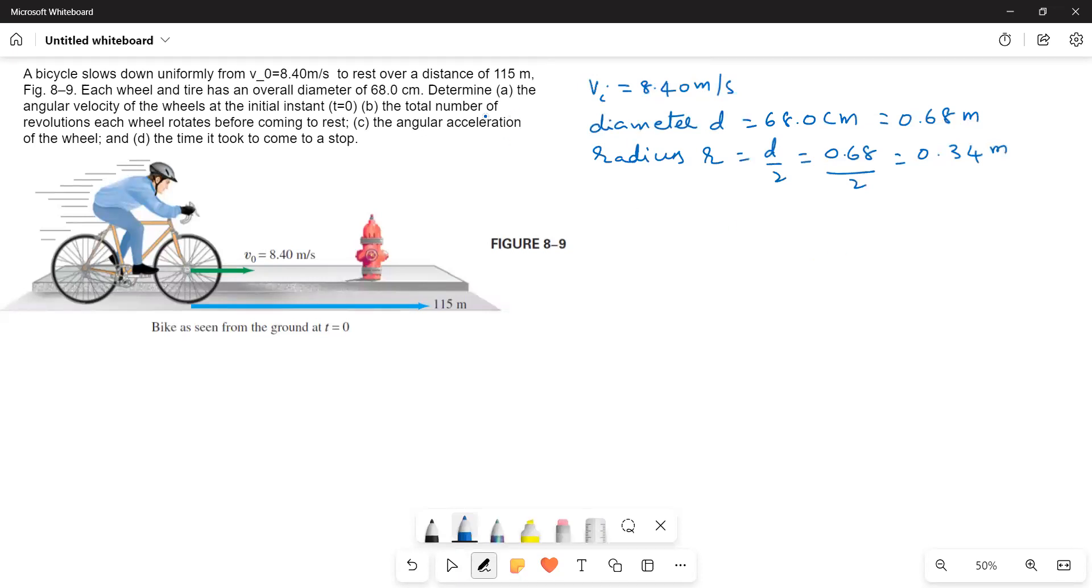First, he is asking us to find out the angular velocity. Angular velocity ω = V/r, so this is equal to 8.4 m/s divided by 0.34 m, which equals 24.7 rad/s.